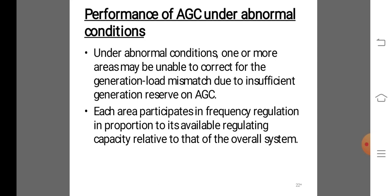This is the performance of AGC under abnormal conditions. Under abnormal conditions, one or more areas may be unable to correct for the generation-load mismatch due to insufficient generation reserve or AGC. Each area participates in frequency regulation in proportion to its available regulating capacity relative to that of the overall system. For interconnected operation, incremental efficiency, fuel cost, water availability, generation limits, tie-line capacities, spinning reserve locations, and area commitments are important considerations when preparing load dispatch schedules.